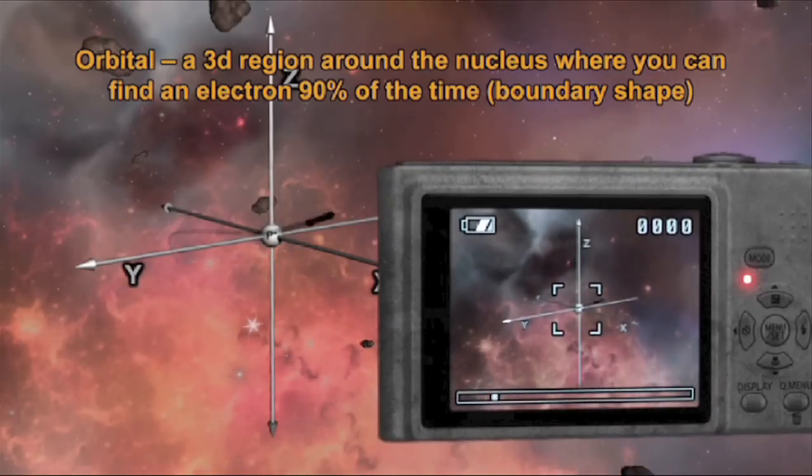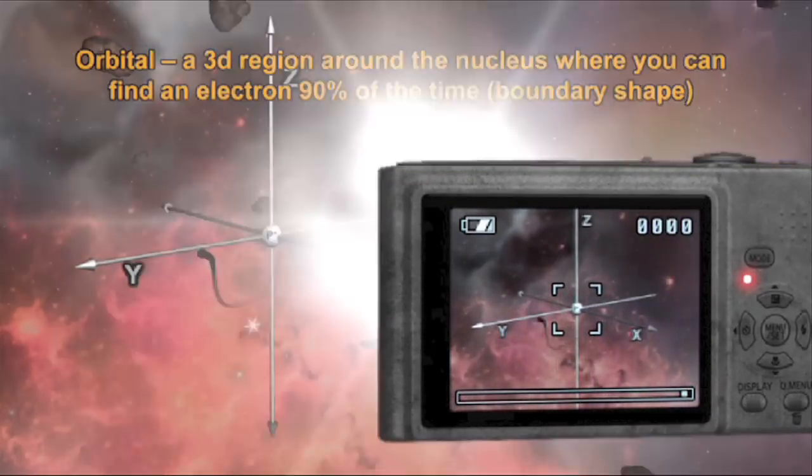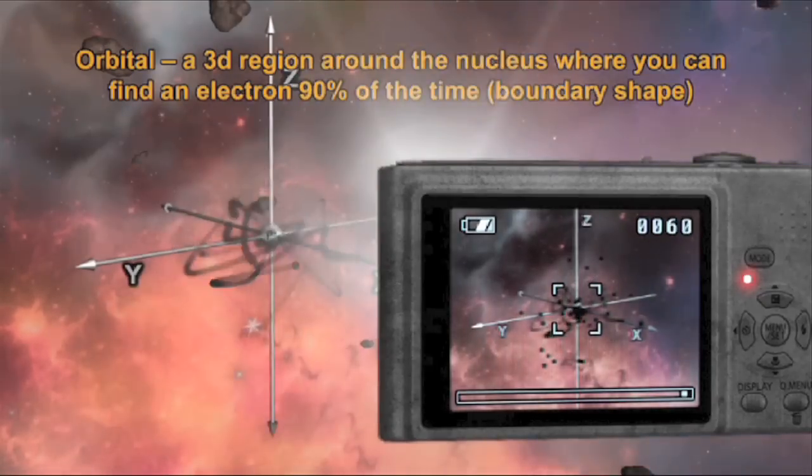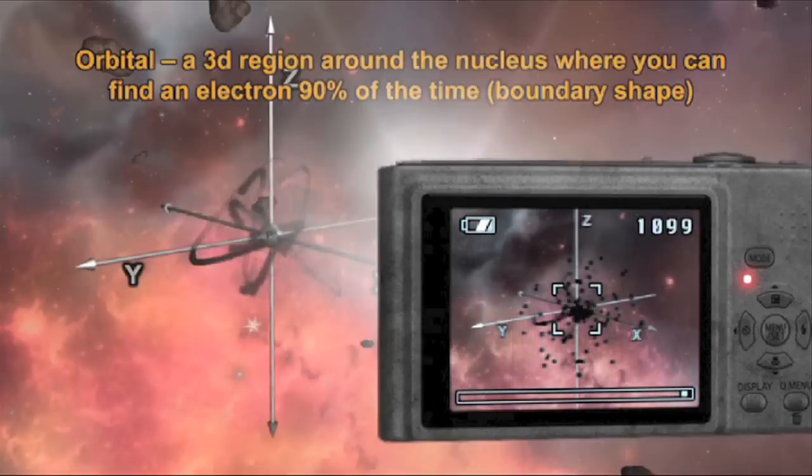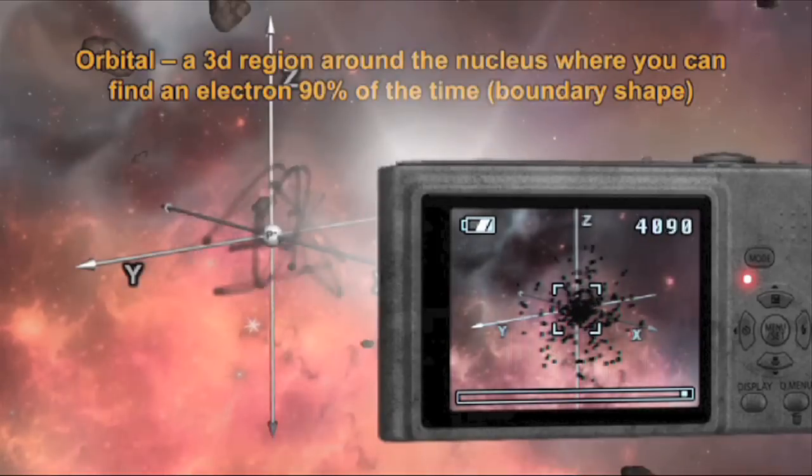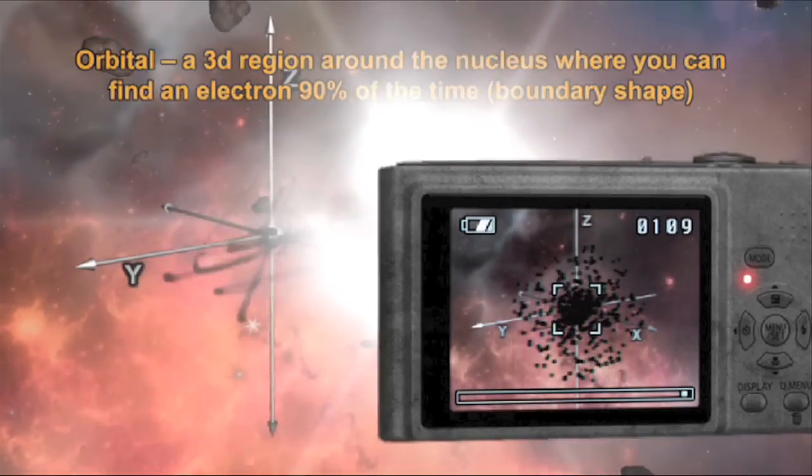With fixed energy around the nucleus, imagine that we take a picture of this electron every second for a day, a week, or month. We see that all these pictures laid on top of one another begin to form an electron cloud around the nucleus.